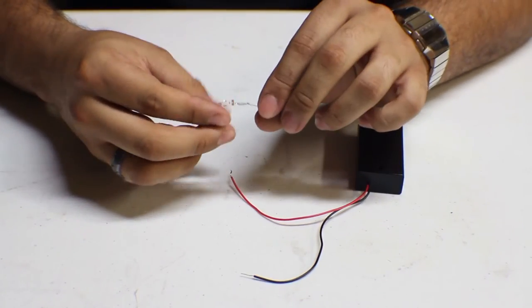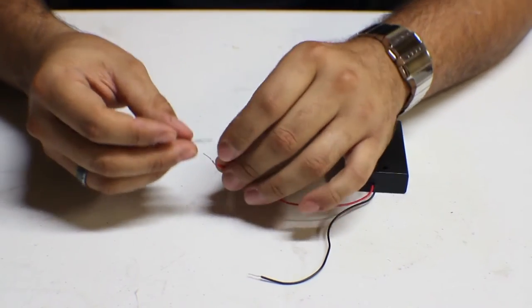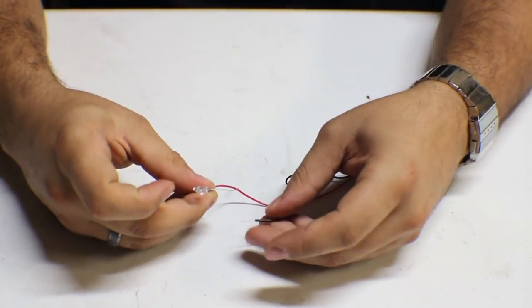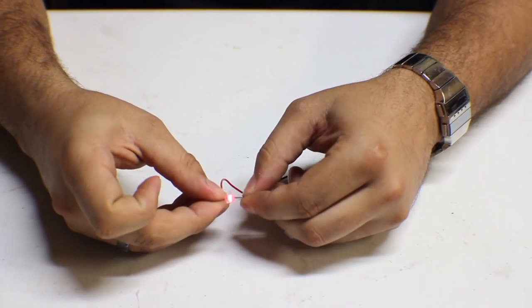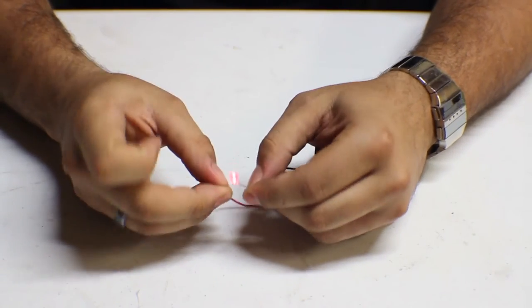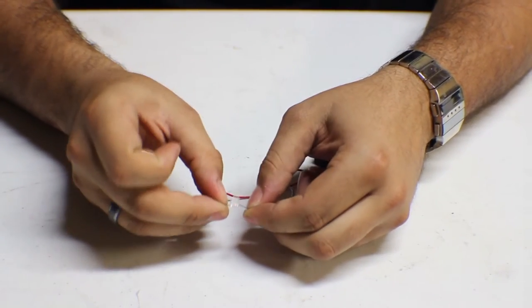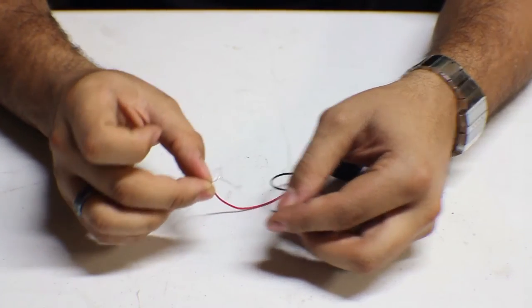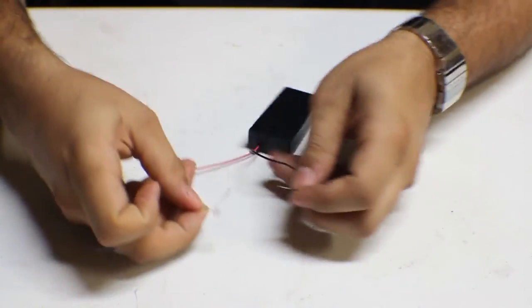So what we're going to do is hook this up. And this is low voltage so I can use my fingers, nothing's going to happen. So when we hook it up, you'll see that little LED lights up. I hope you can see that. And when we take it apart it stops. This is showing the electricity flowing through the wires.